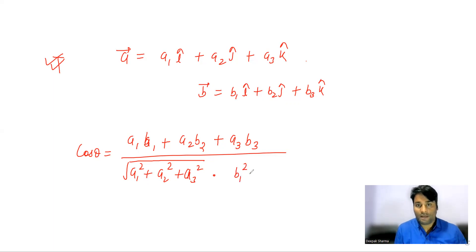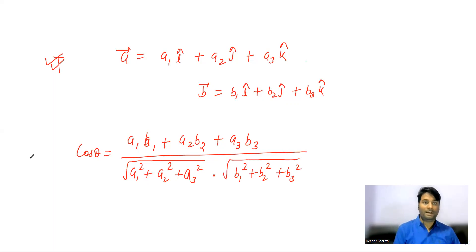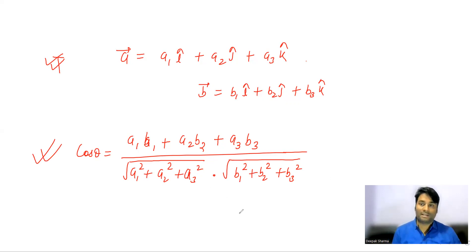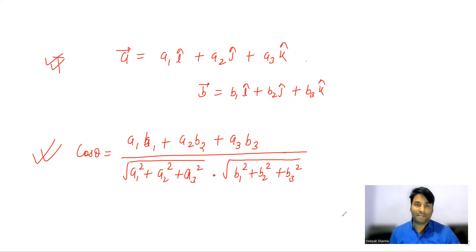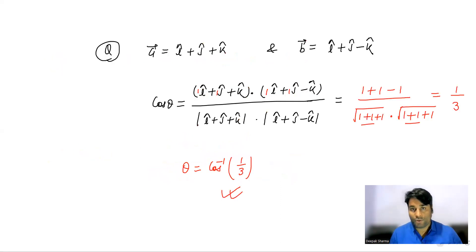The denominator also includes sqrt(b1² + b2² + b3²). You can also find the angle using the cross product: sin theta equals |a cross b| divided by (|a| times |b|).